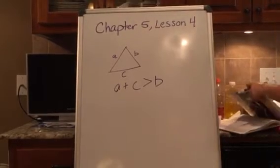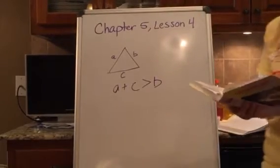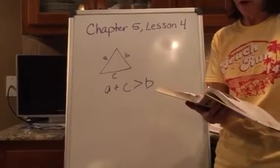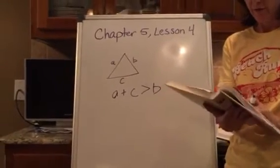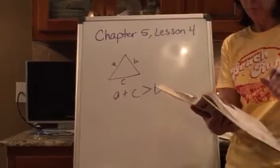Okay, look at theorem 15 on page 201. It says the sum of any two sides of a triangle is greater than the third side. And let's walk through the proof.